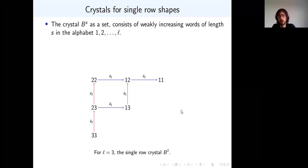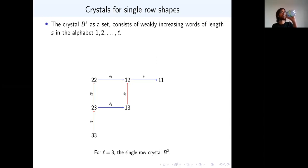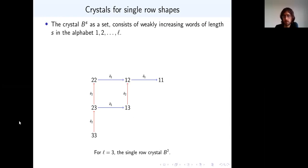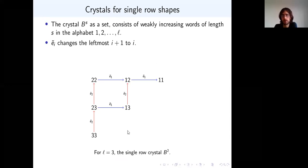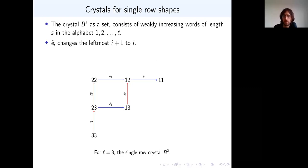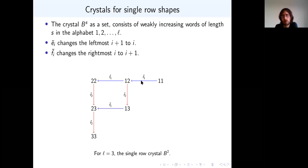The most basic kind of crystal — almost the only one we'll really need — is a crystal for a single-row shape. As a set, this is the set of weakly increasing words of length s in the alphabet 1 up to L, as shown for s=2. The E_i operators change the left-most (i+1) to an i. The F_i operators change the right-most i to an (i+1), going in the opposite direction of the E's. The weight is just the content of the word: the vector consisting of number of 1s, number of 2s, and so on.